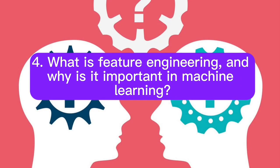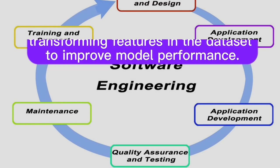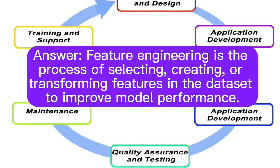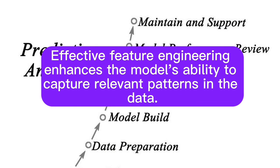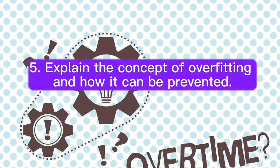Question 4: What is feature engineering, and why is it important in machine learning? Answer: Feature engineering is the process of selecting, creating, or transforming features in the dataset to improve model performance. Effective feature engineering enhances the model's ability to capture relevant patterns in the data.